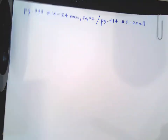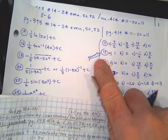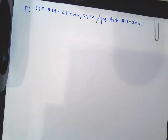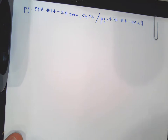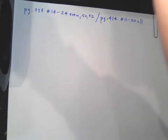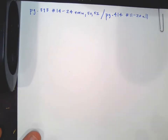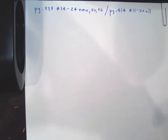Now certain ones you're supposed to use geometry — that means just draw a picture and use areas of triangles, squares, and things like that to figure out the area under the curve to help you figure out what the integral is.